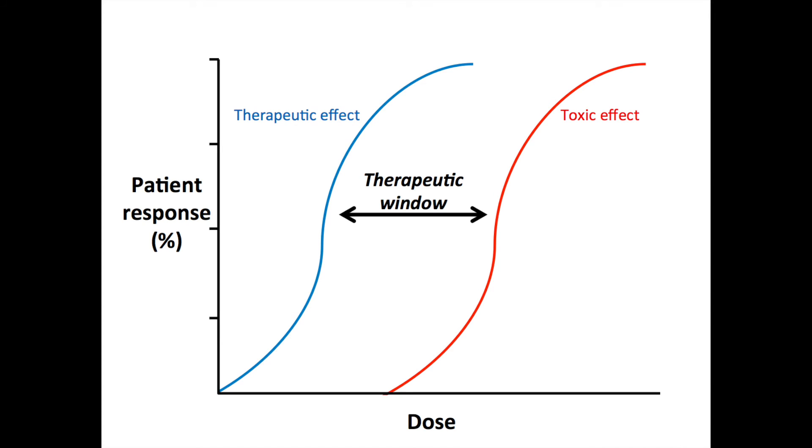Paradoxically, these inhibitors promote dimerization and thereby activation of wild-type BRAF. The mechanism behind this is not entirely clear.